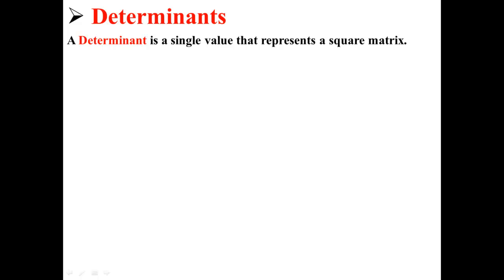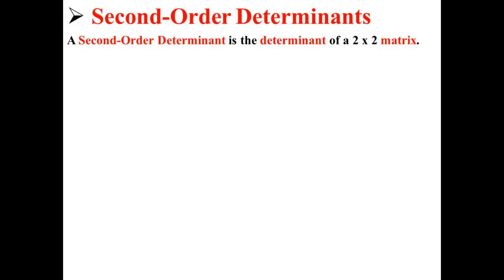A determinant is a single value that represents a square matrix. A second-order determinant is the determinant of a 2 by 2 matrix.